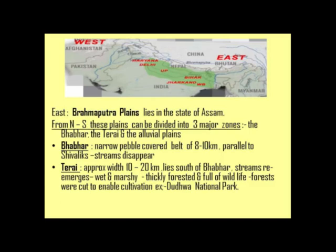The fast-flowing rivers coming down from the mountains deposit big stones and pebbles in the Bhabar belt. The water is not retained here — it seeps below the stones — and so river streams have disappeared in this zone. After Bhabar, Tarai comes. The Tarai belt is approximately 10 to 20 km wide and lies south of the Bhabar, where the streams come up again.